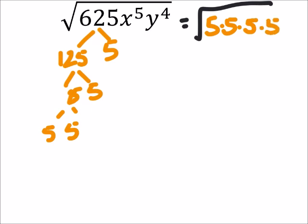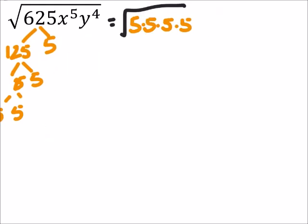And then we've got those x's, which I need more room for. So the x's, I've got five of those, right? So that'd be x times x times x, five of these x's. And then we got four y's: one, two, three, and four.